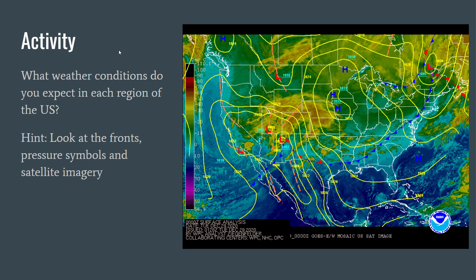Here's another activity. What weather conditions do you expect in each region of the US? A hint is to look at the fronts, pressure symbols, and satellite imagery. You can pause and jot some notes down before the answers are revealed.